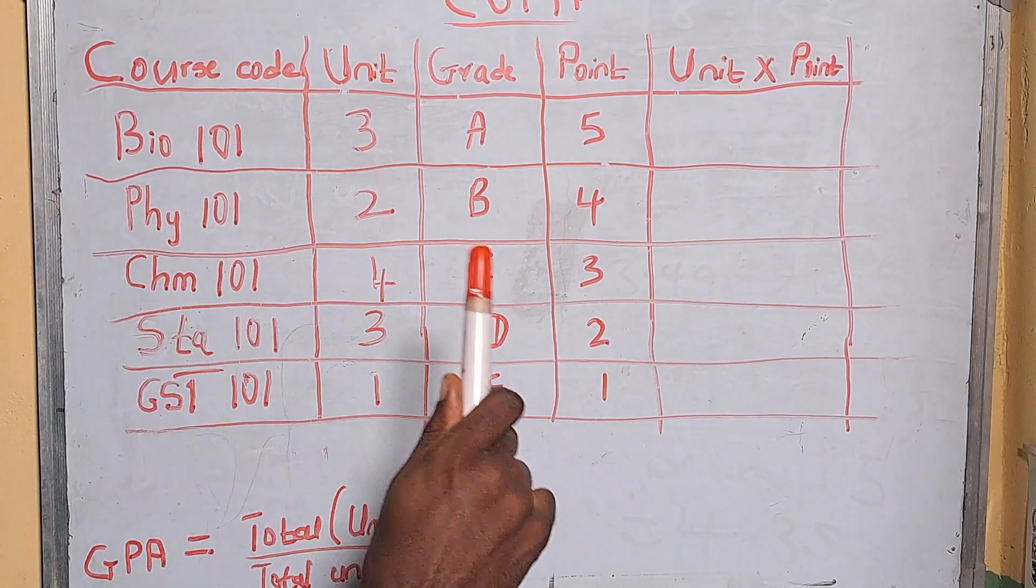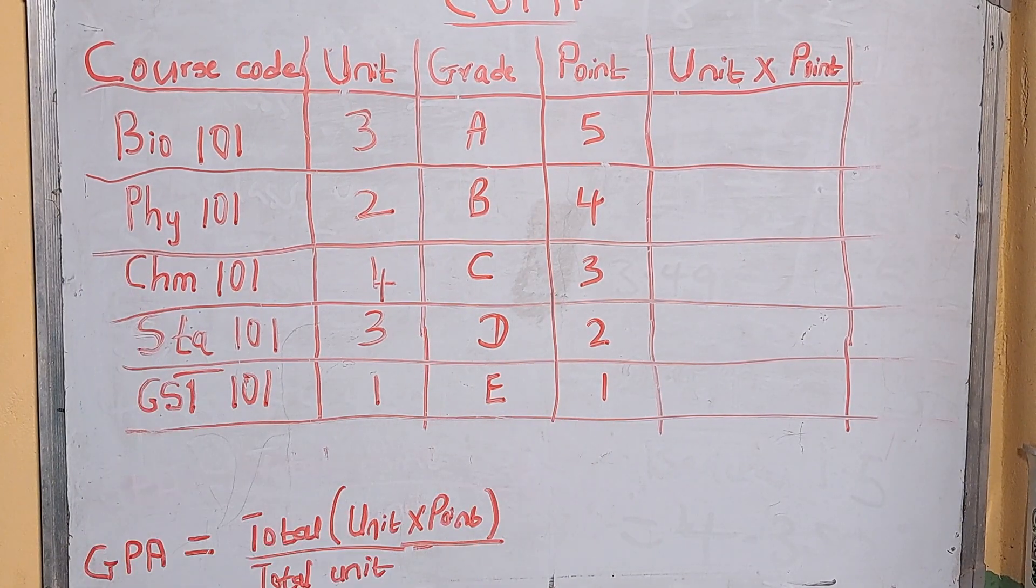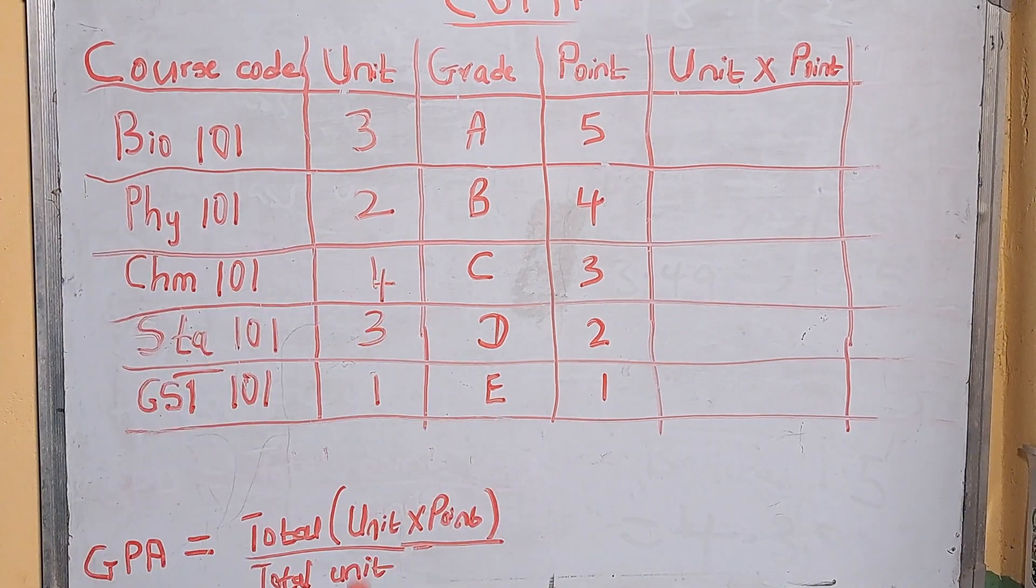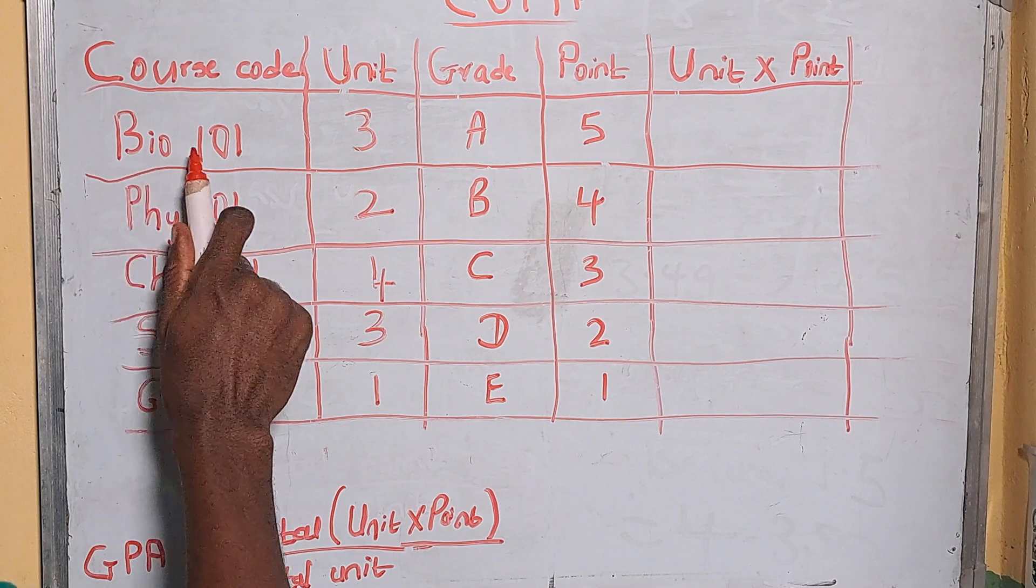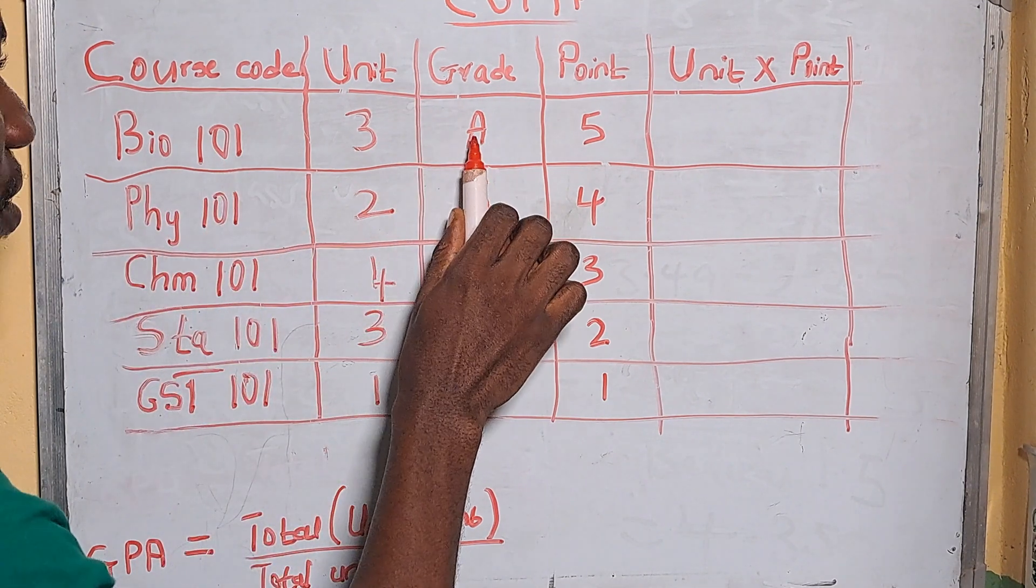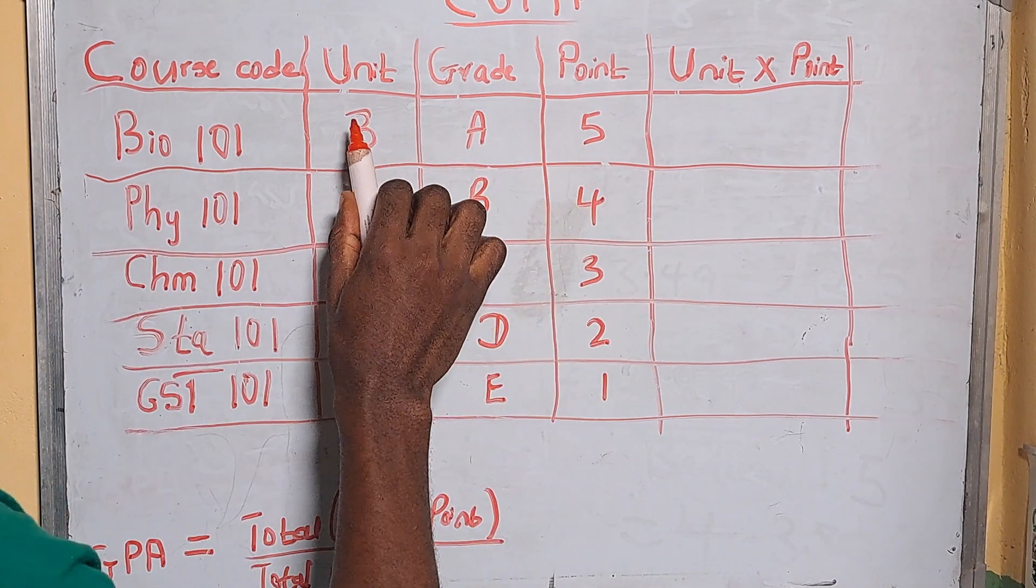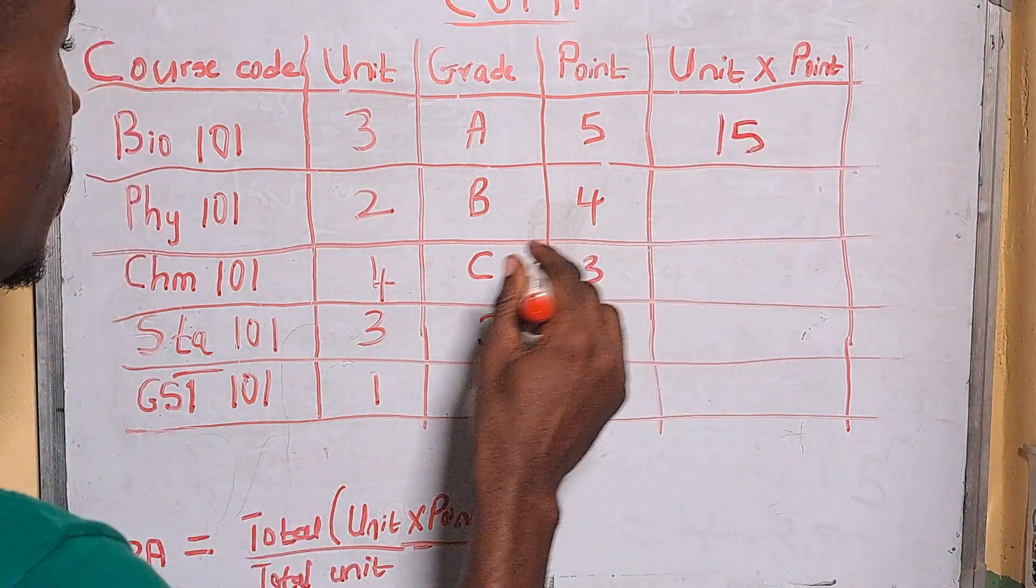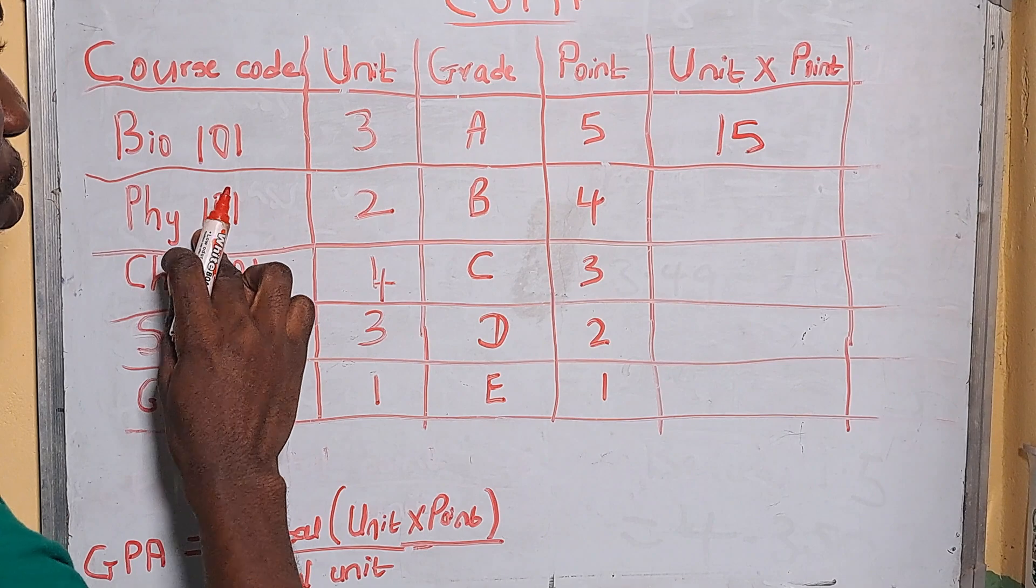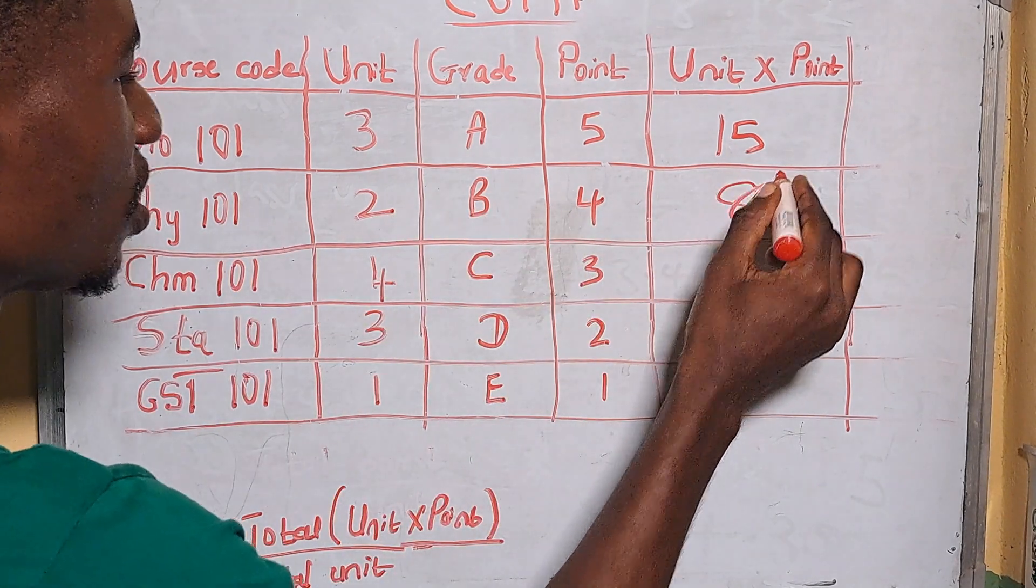That's the reason why you need to get a good grade so that you can get a high CGPA. Now for this first result which is Bio 101, I got an A which is five points, so I will multiply this three by five which is 15. Then for this second course Phy 101, I'm going to multiply two by four which is eight.